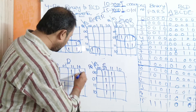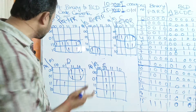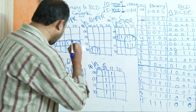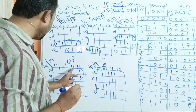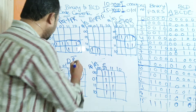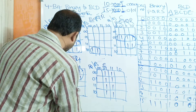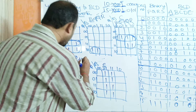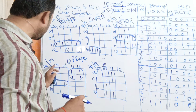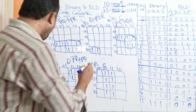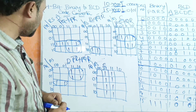Likewise, let us simplify for D. We can make 4 cells into one group. The first zero is common — P bar, giving P̄. If we observe these 2 cells, R is common. Next, we can make these 2 cells as one group where P=1, Q=1 gives PQ. If we observe the next 2 cells, R̄ is common. So the simplified expression for D involves P̄, R, PQ, and R̄.